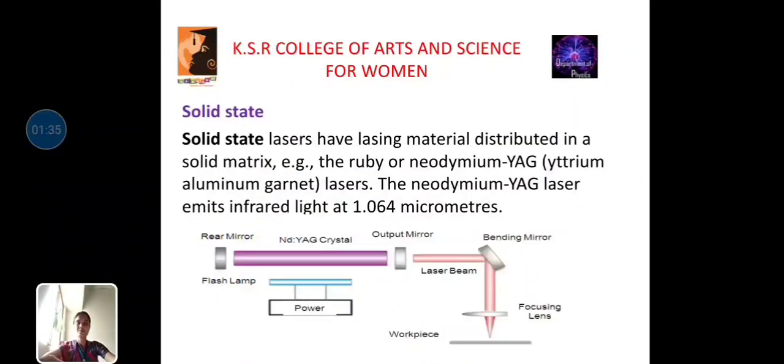First, we brief the solid state. Solid state lasers have lasing materials distributed in a solid matrix. Example, the ruby or neodymium YAG (yttrium aluminum garnet) lasers. The neodymium YAG lasers emit infrared light of 1.064 micrometers.